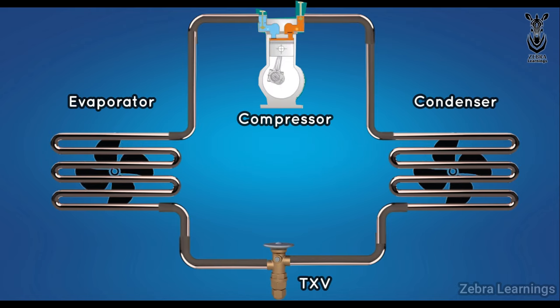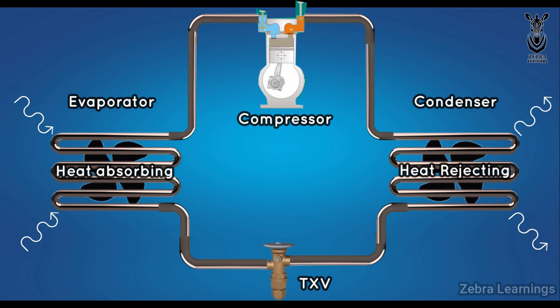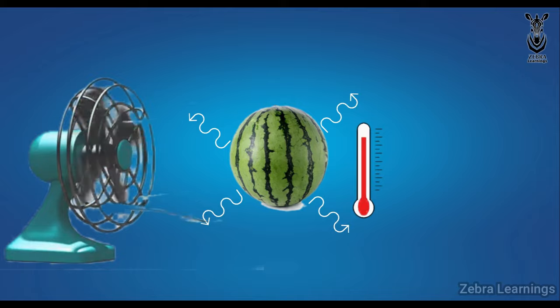The important function of this cycle is to absorb heat and reject heat. According to the law of thermodynamics, we do not cool any substance. We only remove the heat from that substance. As heat is removed, the object is cooled.